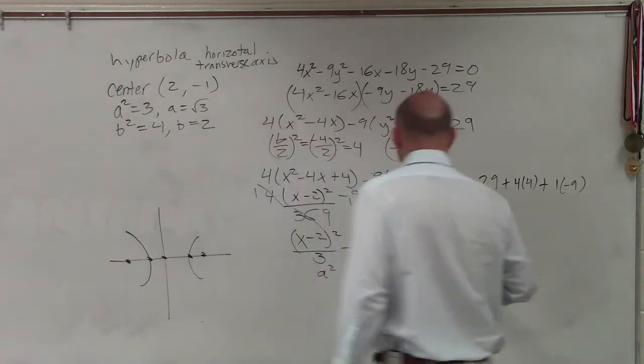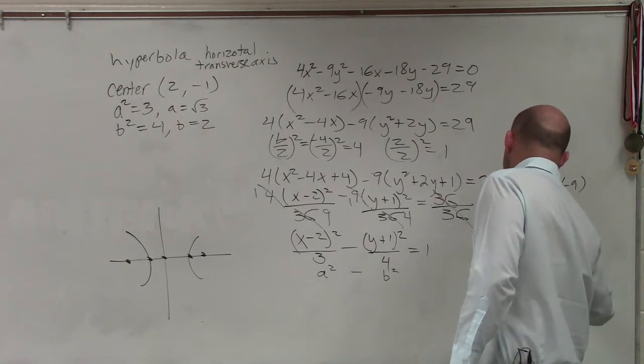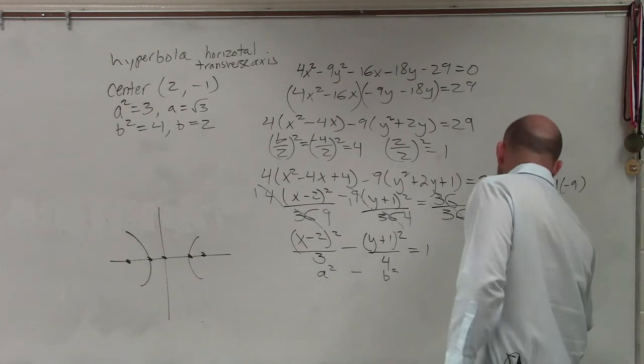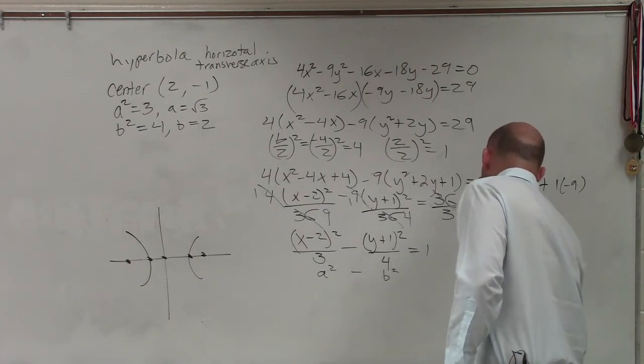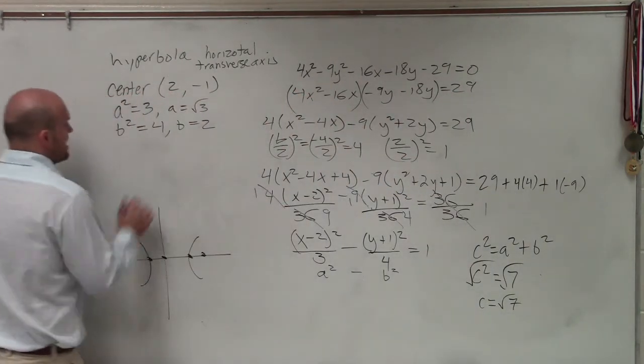And then to find c, remember the formula is c squared equals a squared plus b squared. So c squared equals, what, 7? Square root, square root. c equals the square root of 7, which is 2.6457513. But we'll just leave it as that.